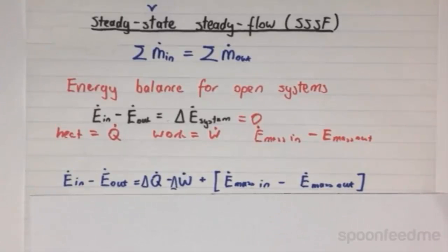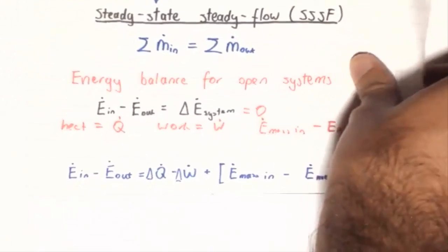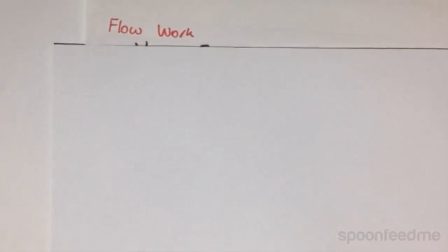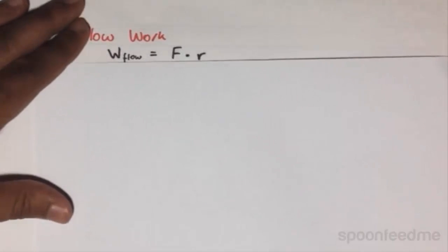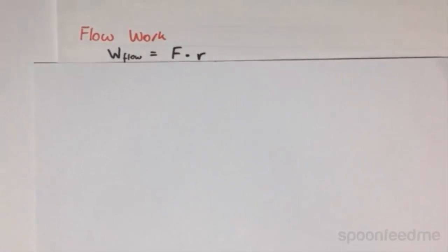Moving on to the flow work. When there is a flow of mass into the system, it is logical to assume that this flow will act on the system in the form of work. From fundamental physics, we know that the work flow is going to equal the force times the distance that the force is acting.